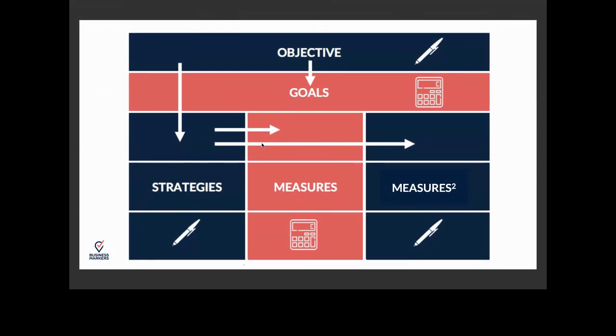Measures can mean 'to measure' as a verb — that's what we put next to the strategies. And the second Measures is the noun, 'taking measures,' which we put at the right side — that's where we put our actions or projects. On the OGSM model you'll see blue and red colors. The blue things are written in words; the red things are written in figures. For those who are colorblind, we've put a pen and a calculator.